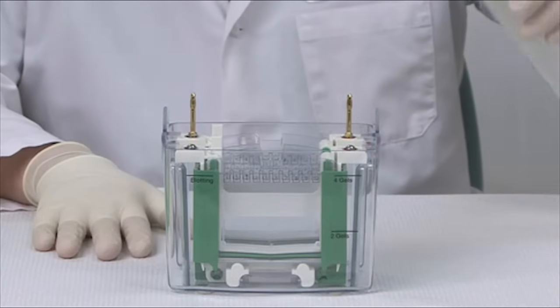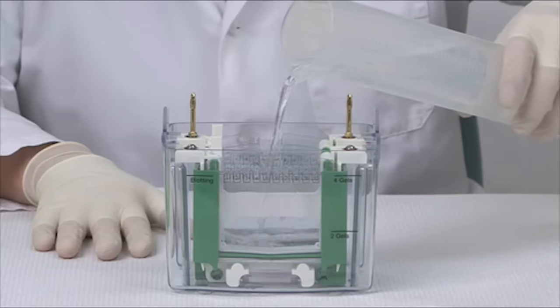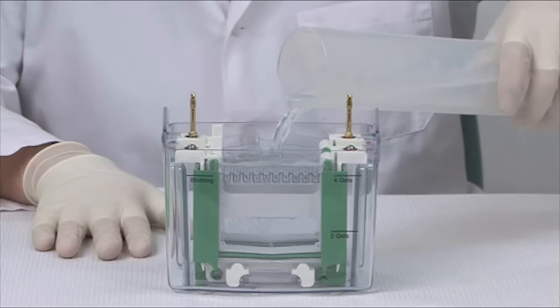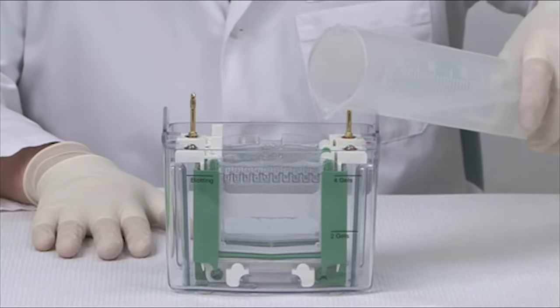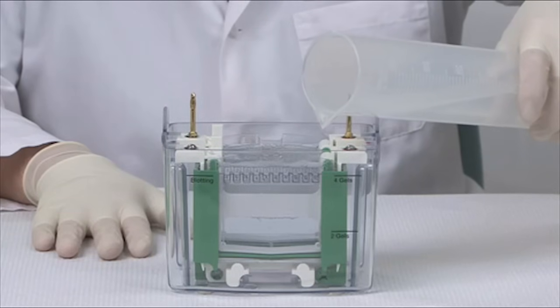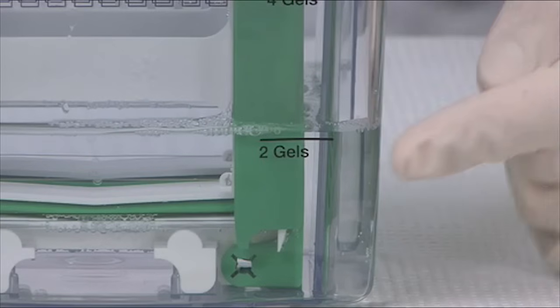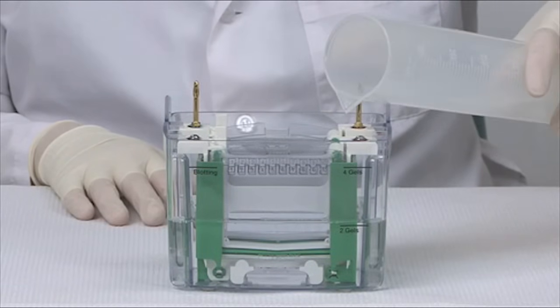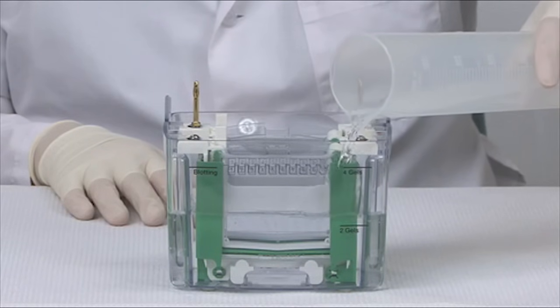Add running buffer by filling the inner chambers first, and then the outside chamber to cover the wells in the gels. If you are running one or two gels in one core, fill it to the two gel mark. Now since I am running four gels, I want to pour buffer up to the four gel mark on the TetraCell tank.